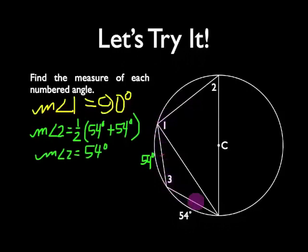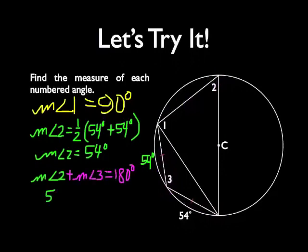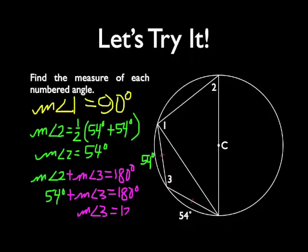And now you will notice that there is a quadrilateral here inscribed in this circle. That means that the opposite angles are supplementary. So angle 2 and angle 3 have to be supplementary by the inscribed quadrilateral corollary. 180 minus 54, 126. So that means that the measure of angle 3 is going to be 126 degrees.